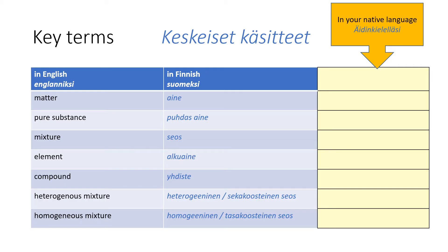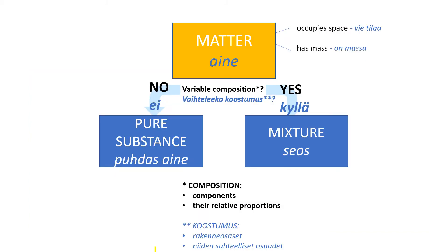Check out this list. Do you know the definitions of these words? What do you think they mean? Can you translate them into your own native language? Matter — aine in Finnish — is something occupying space and having mass, massa in Finnish.